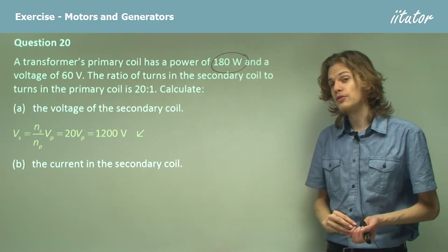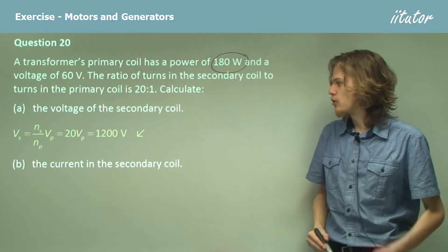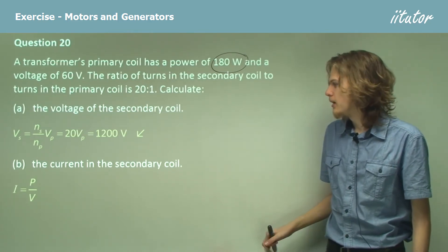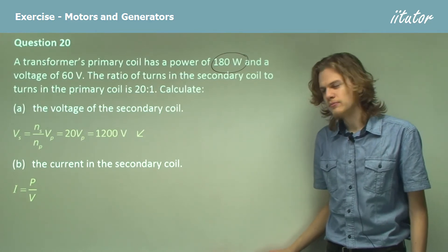So in order to find the current in the secondary coil, we can use our equation: current equals power over voltage, and then just substitute in the numbers.